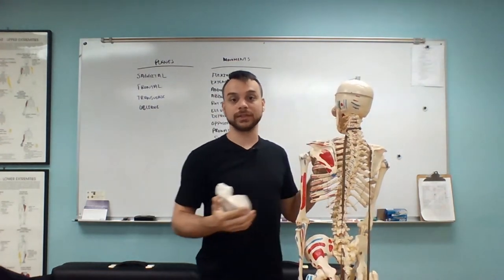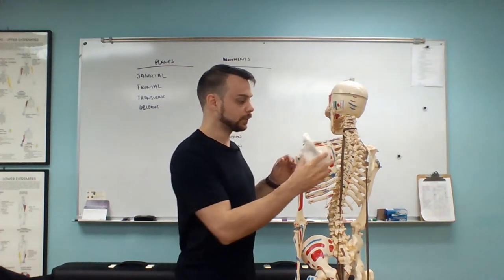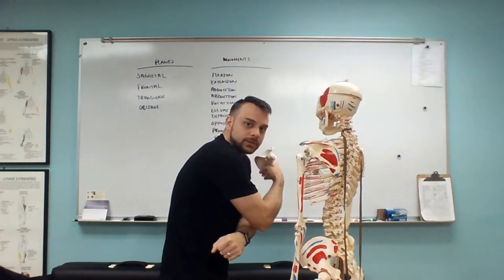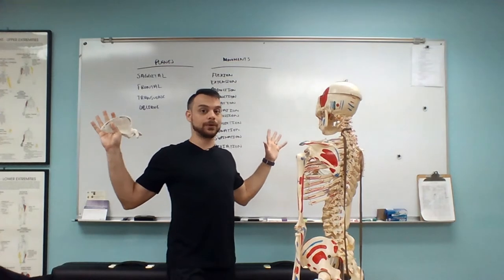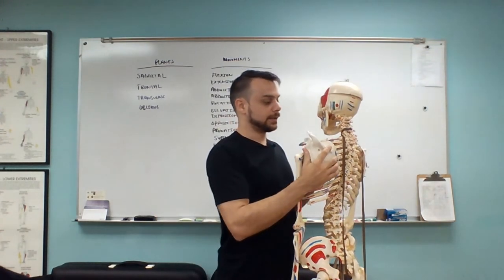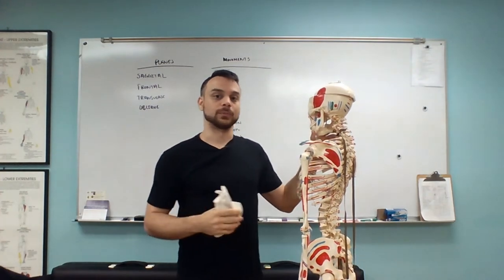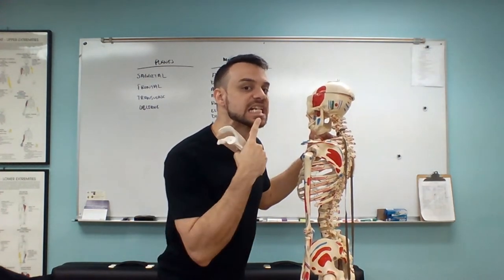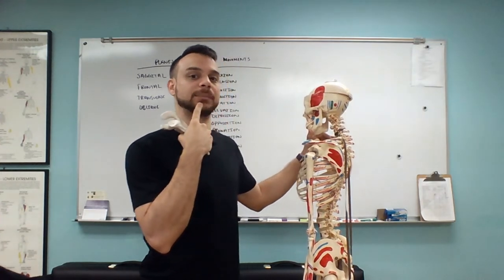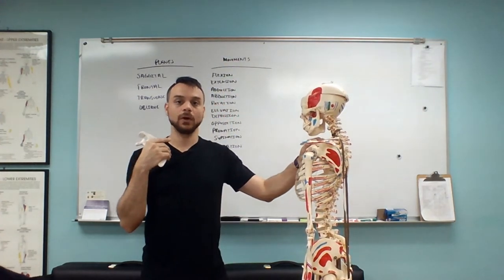One more scapular movement: protraction and retraction. The mandible is also capable of these movements. Protraction means to come forward — if you're proactive, you're outgoing and doing things, so protraction means coming forward. Retraction means taking a step back. With the shoulder blade, protraction would be the shoulder blade coming forward, like going into a bear hug. With the mandible, protraction is jutting our jaw forward for a nice underbite, and retraction is pulling it back.